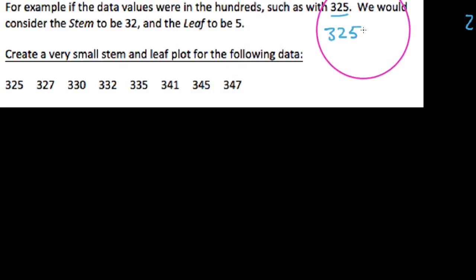That is, in the number 325, we would say that 32 is in the leading position, and then we would just say that 5 is in the trailing spot.